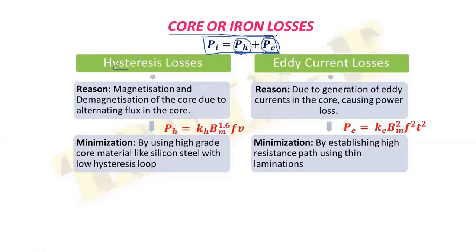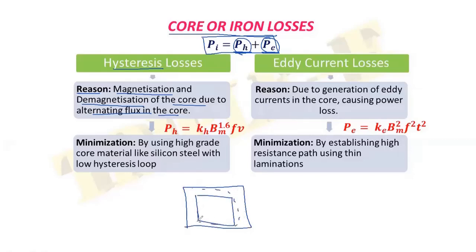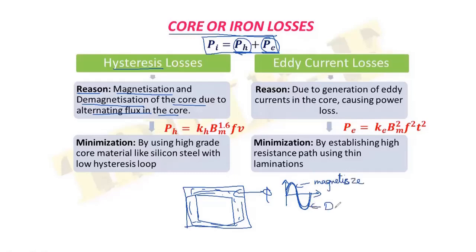The reason for hysteresis loss is the magnetization and demagnetization of the core due to alternating flux. The core has alternating flux which keeps changing its value from positive to negative. Because of this alternating flux, the core molecules get magnetized for one half cycle and demagnetized for the next half cycle. Due to this continuous magnetization and demagnetization of the core molecules, the core starts to heat, and this type of loss is called hysteresis loss.